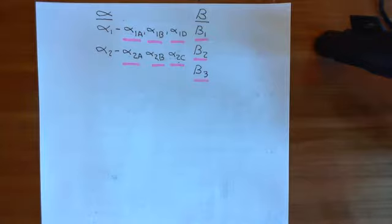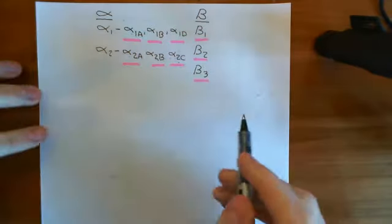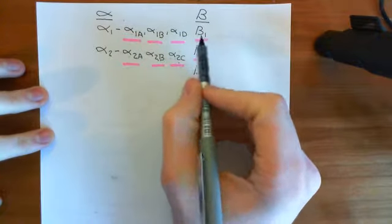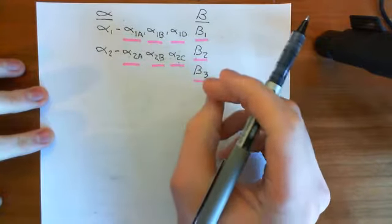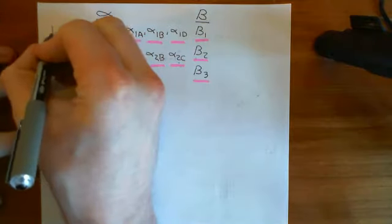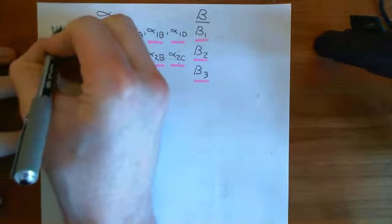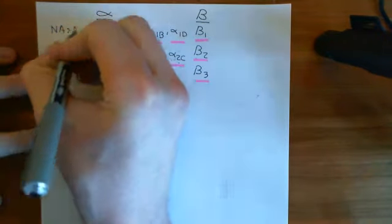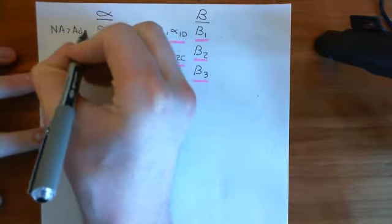One thing I want to discuss quickly is the different affinity that adrenaline and noradrenaline have for these different receptors. For each receptor, I want to tell you which of the two catecholamines has the greater affinity. I'll abbreviate noradrenaline as NA and adrenaline as ADR. For alpha-1, noradrenaline has a greater affinity than adrenaline.